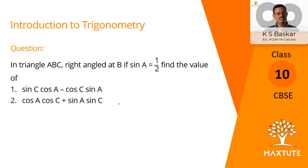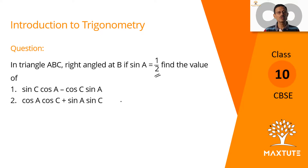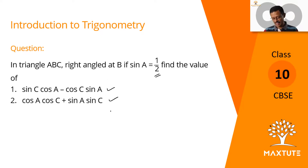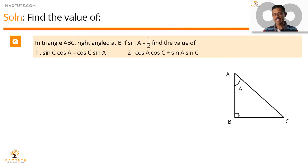This is an easy question. We have been given the value of sin A which is equal to 1 by 2. What we need to do is compute the value of these two expressions. The given triangle is a right angle triangle, right angle at B.